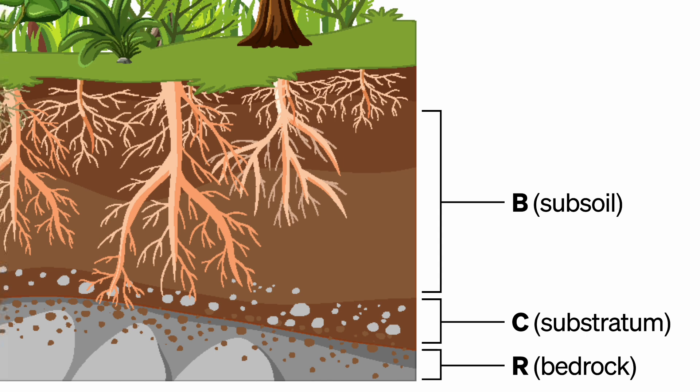Above the B layer, we have the A layer, known as the surface soil or topsoil. This is increasingly rich organic soil found shallow beneath the surface.